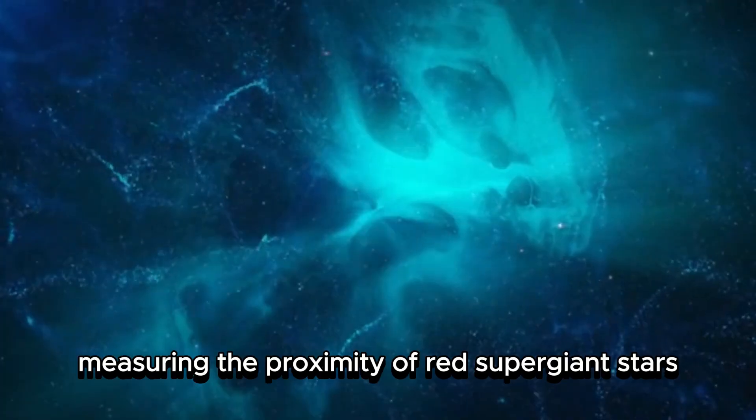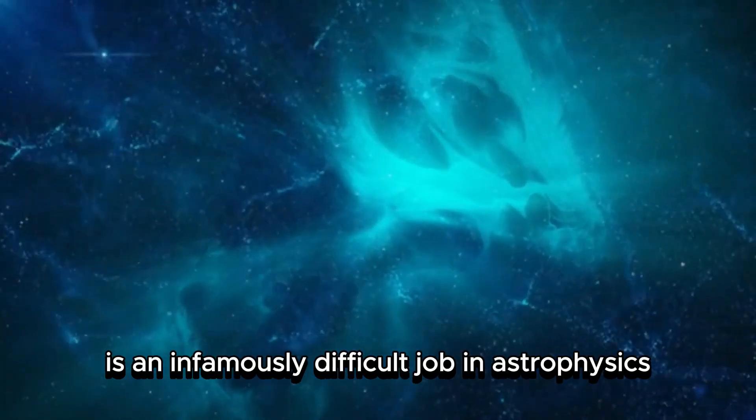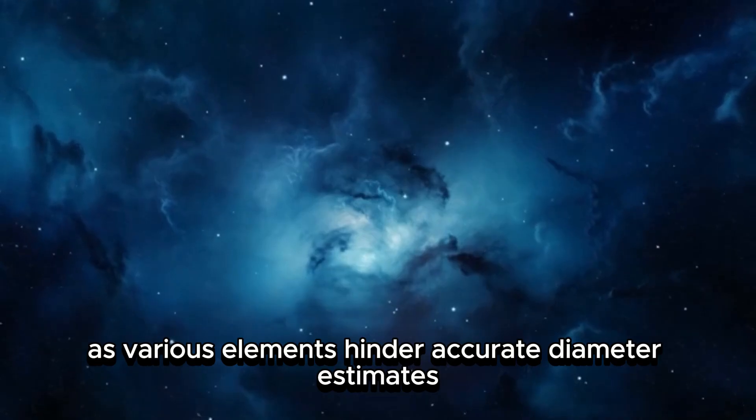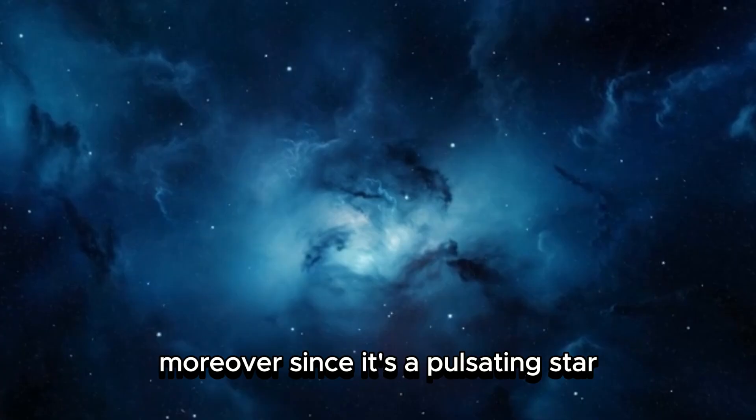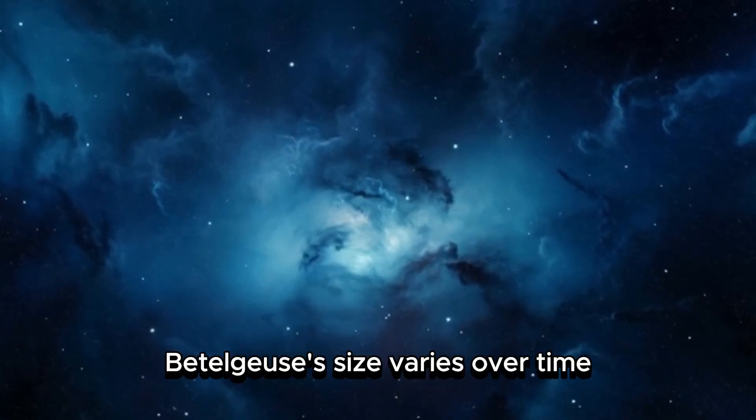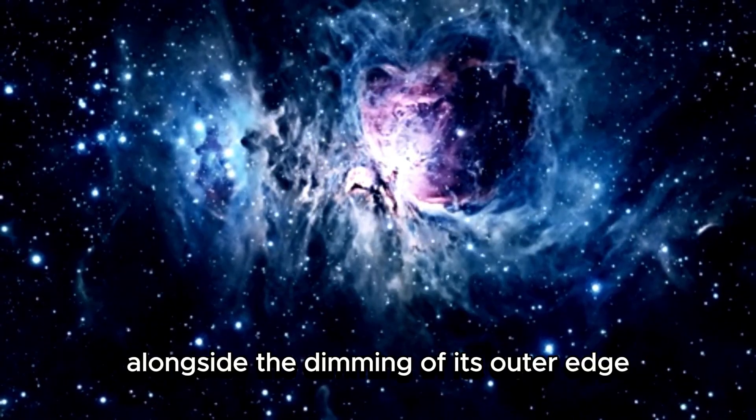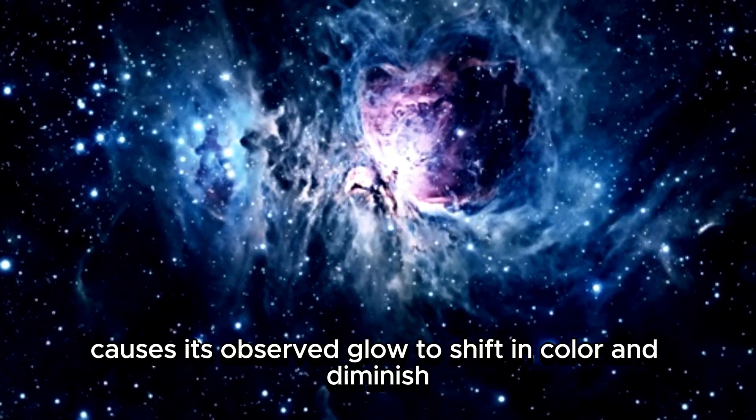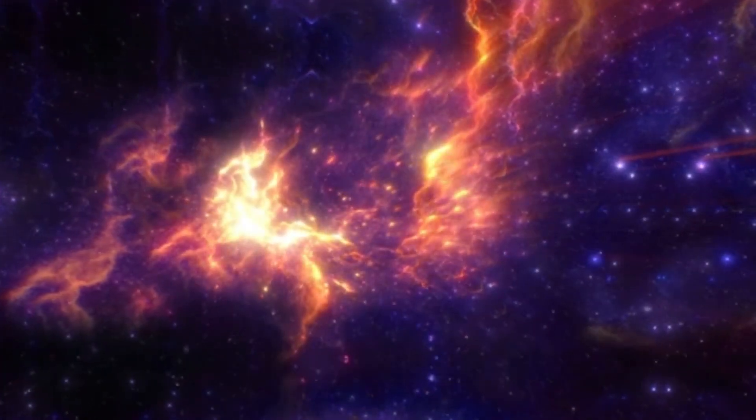Measuring the proximity of red supergiant stars like Betelgeuse is an infamously difficult job in astrophysics, as various elements hinder accurate diameter estimates. Moreover, since it's a pulsating star, Betelgeuse's size varies over time. This characteristic, alongside the dimming of its outer edge, causes its observed glow to shift in color and diminish as we view it further from its core.